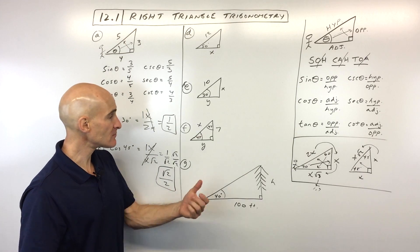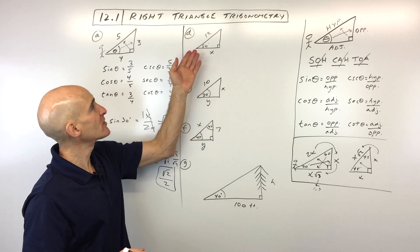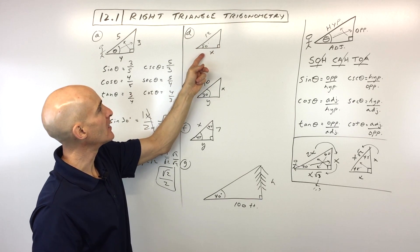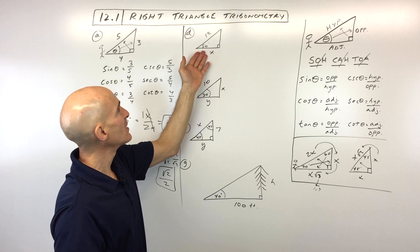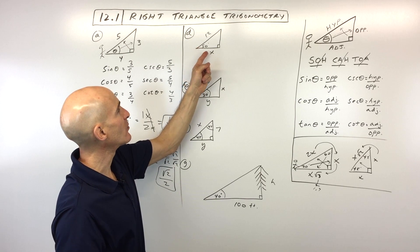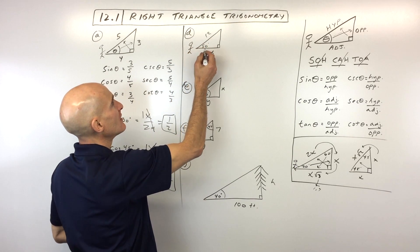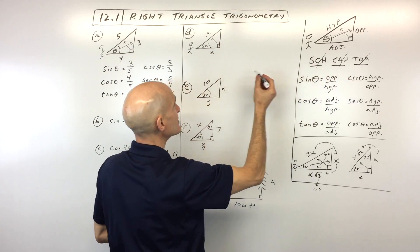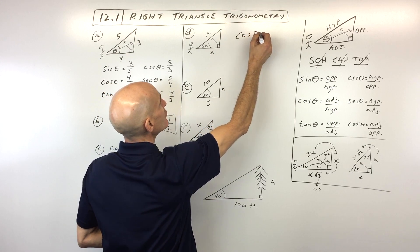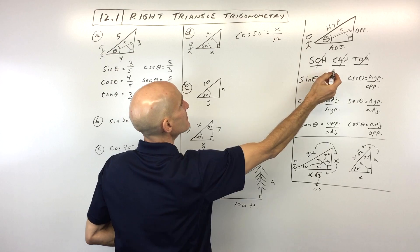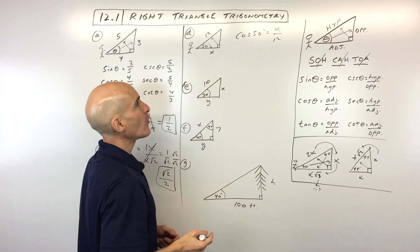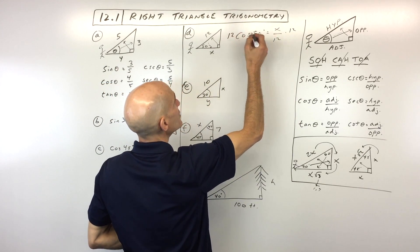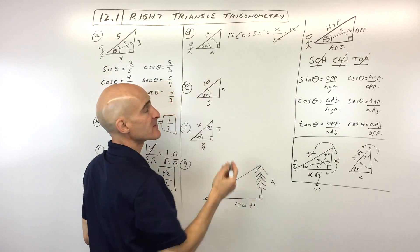In example D, we want to find the missing side length. We figure out what trig function ties together the angle, this side, and that side. We position ourselves at the angle and see they're giving us the adjacent side and the hypotenuse — that's cosine. So cosine of 50 degrees equals adjacent divided by the hypotenuse, which is 12. To get X by itself, multiply both sides by 12. Those cancel, and you've got 12 times the cosine of 50.